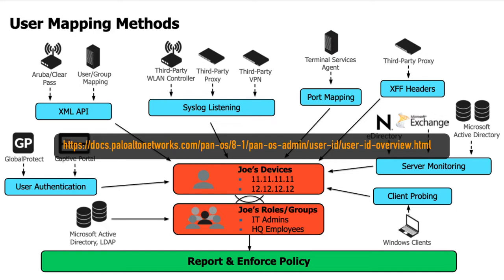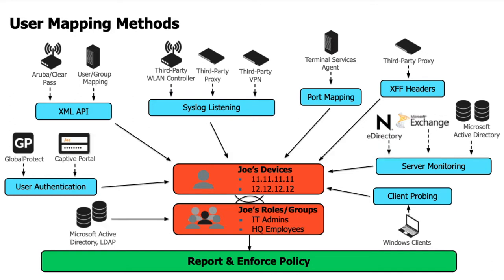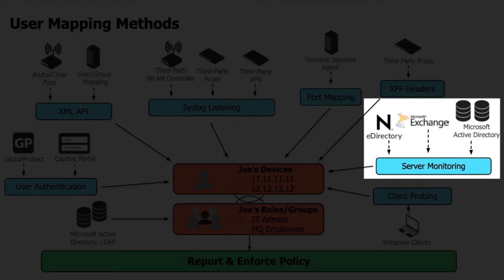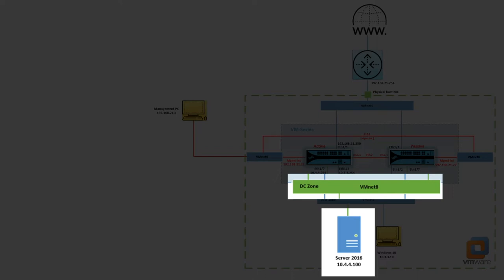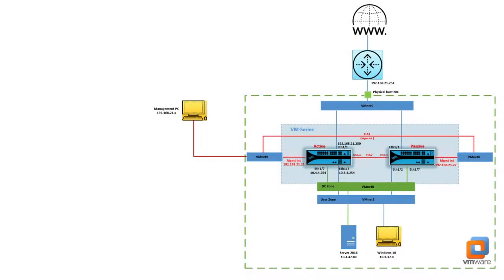In this User-ID lab I'm going to be covering the Windows-based agent, which is a server monitoring mapping method. As you can see in the topology diagram, a new DC security zone has been created — this is where the Active Directory server will reside. Once the next generation firewall is configured with the lab objectives, the Windows client will be able to communicate from the user zone to the DC zone. The User-ID Windows agent will collect IP address to username information and send it on to the firewall.